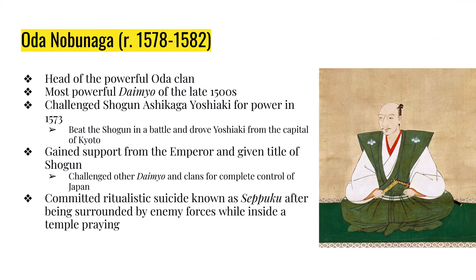Let's talk about Oda Nobunaga. He is in power from 1578 until 1582. He is the head of the powerful Oda clan, which was the most powerful clan, or at least in the top three. He was clearly the most powerful daimyo by the late 1500s and is considered in Japanese history as the first great unifier. In 1573, Nobunaga challenged the shogun Ashikaga Yoshiaki, and Nobunaga's army beat Yoshiaki's army in battle. This drove Yoshiaki from the capital, Kyoto, which officially ended the Ashikaga shogunate, and Nobunaga was given the power of the government by the emperor.